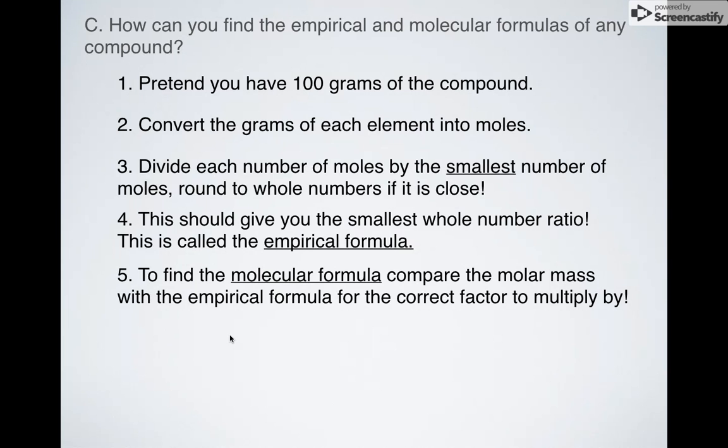So how do we find the empirical formula and the molecular formula? You don't have to memorize these steps. They're given to you on your formula page. But still, the first thing you need to do is pretend you have 100 grams of it. So just pretend you have 100 grams of whatever compound you're looking at. Convert all of those from grams of each element into moles. Then divide each number of moles by the smallest number of moles and round to the nearest whole number if it's close.